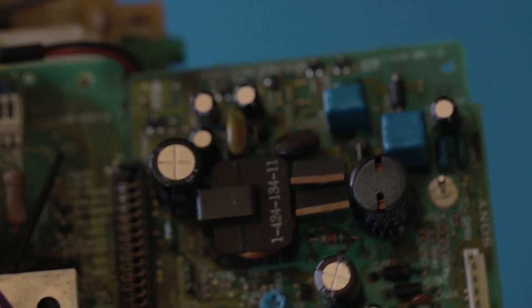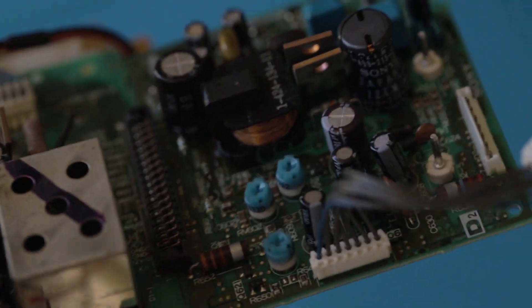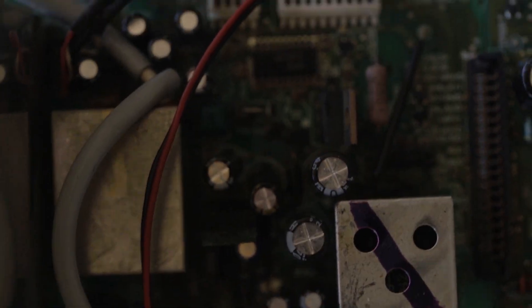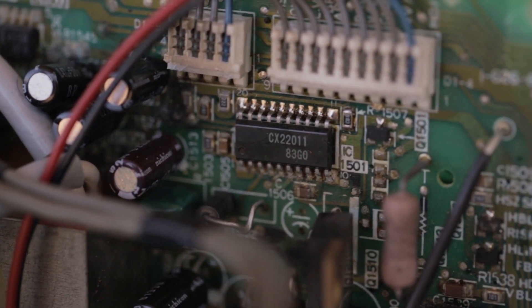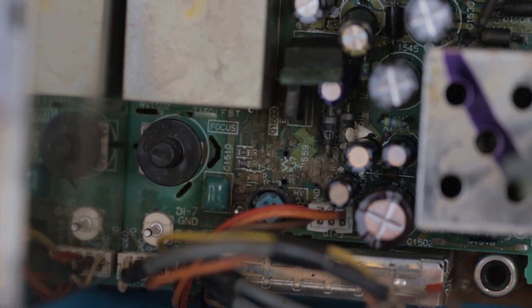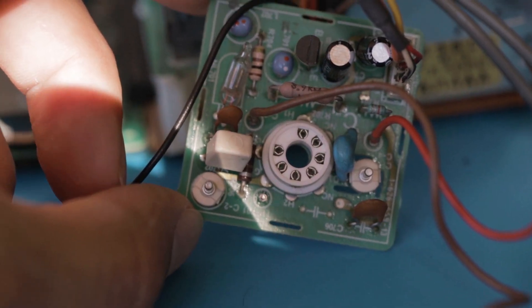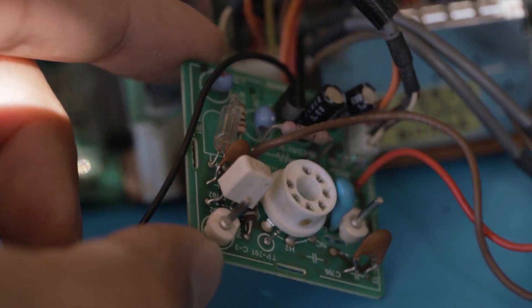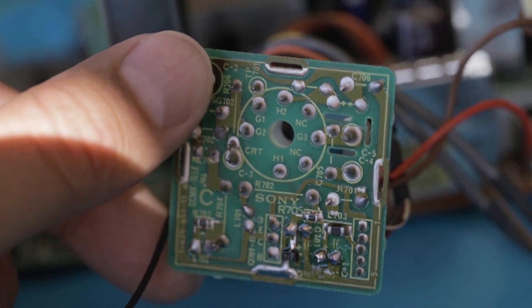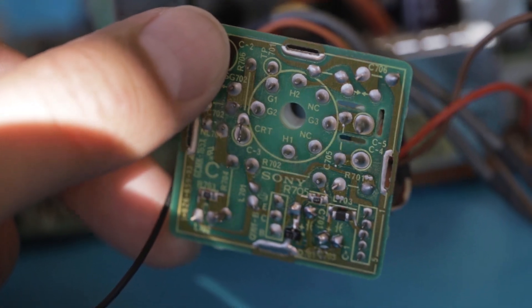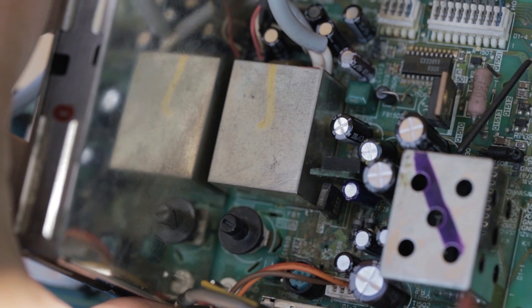I already replaced all the capacitors on both of these deflection boards. Unfortunately, there's some ugly corrosion from the electrolytic gel that leaked everywhere. Some of these surface mount components are so fragile, I did not want to risk cleaning them and damaging them further. I did what I could, but some of it still looks ugly. Here's a look at the tiny flyback transformer.